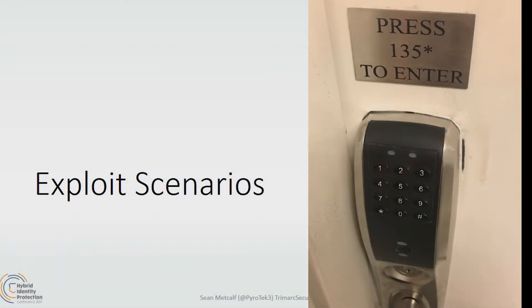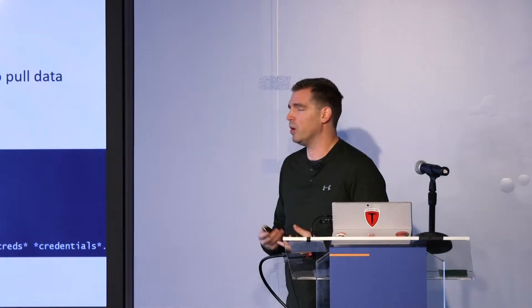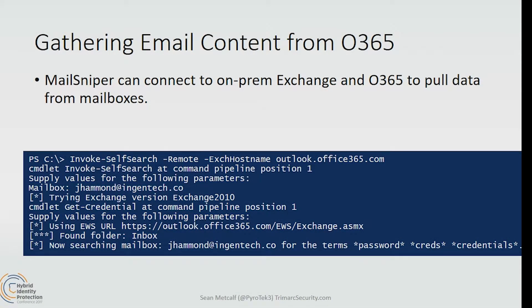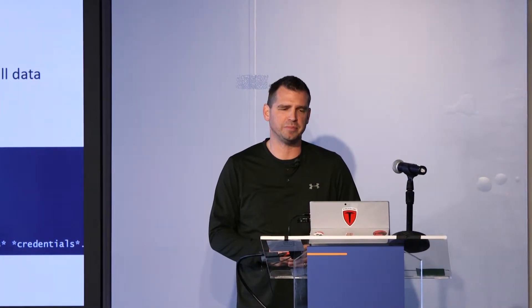Let's look at some exploit scenarios. How can we gather email content from Office 365 if we have a valid user account? There's a PowerShell tool called MailSniper which can connect to an on-prem Exchange or Office 365 environment to pull data from mailboxes. We run it, it prompts for a user account — either an admin or the actual user's credentials — and then we can connect to the mailbox of our choosing. It searches the mailbox automatically for terms like 'password,' 'creds,' and 'credentials.' This is one of the reasons why it's very important to protect user identity and passwords and ensure they're using good passwords — preferably MFA.